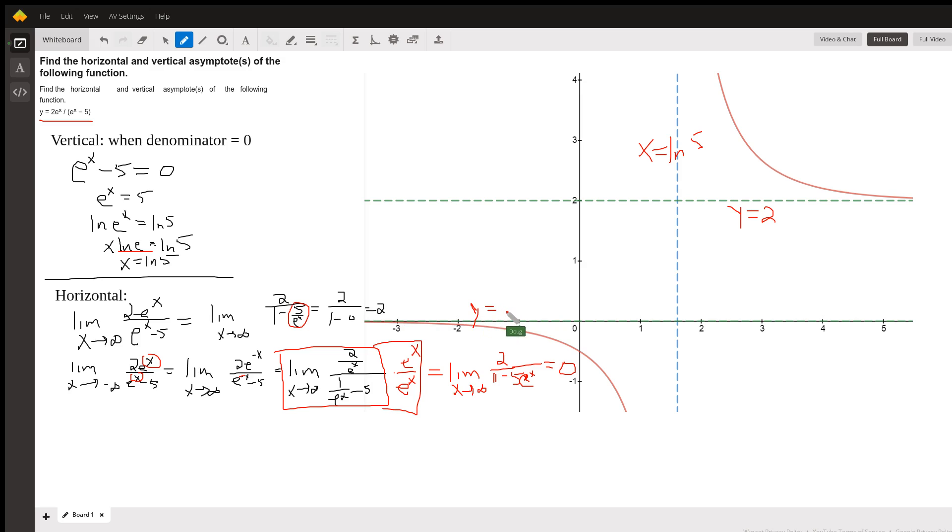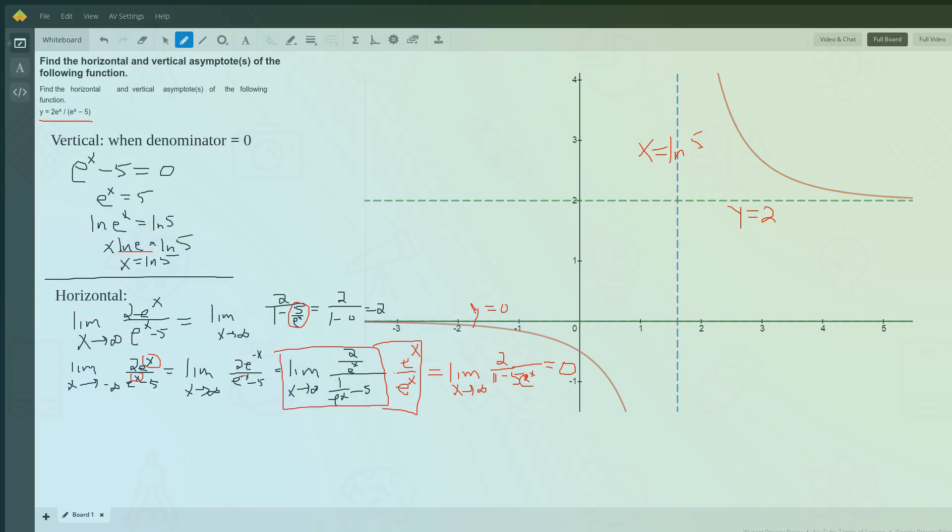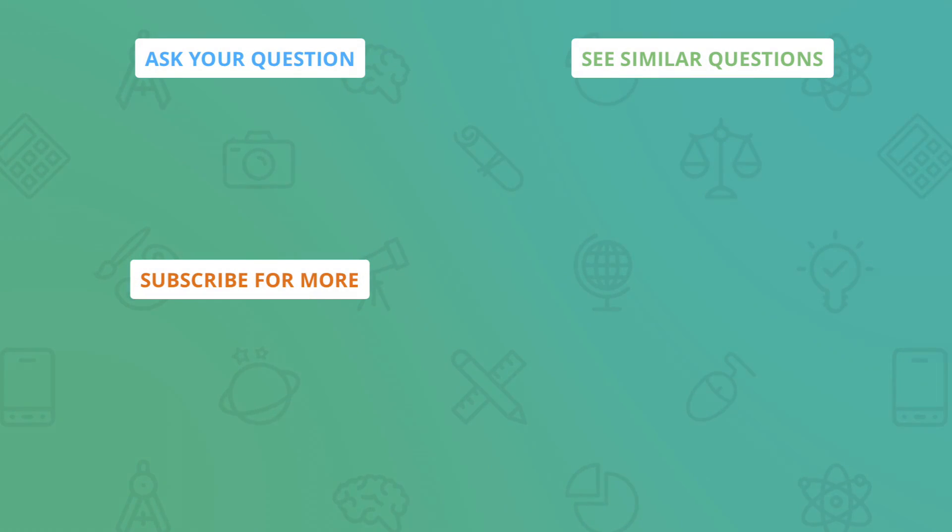Of course, the graph only approaches that horizontal asymptote asymptotically as x approaches negative infinity. So you've got 2 horizontal asymptotes, one vertical asymptote. There you go! Hope that helped. If you have any questions, post a comment.